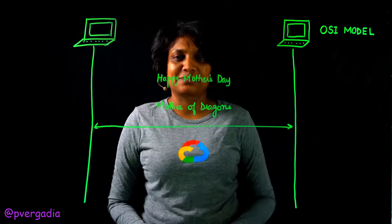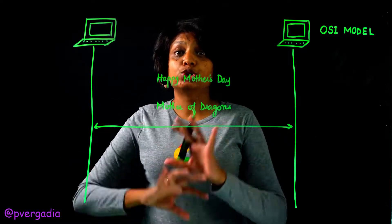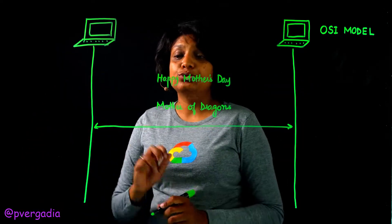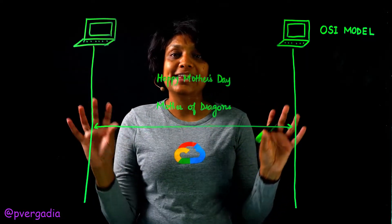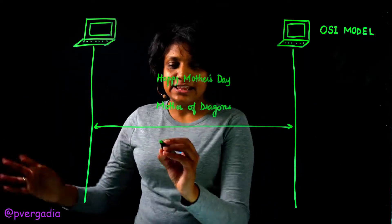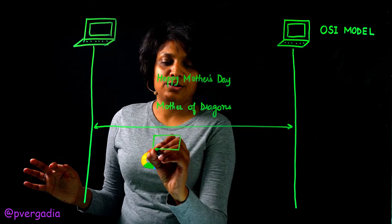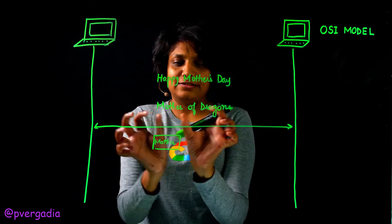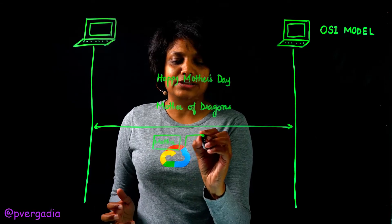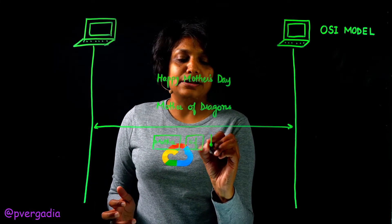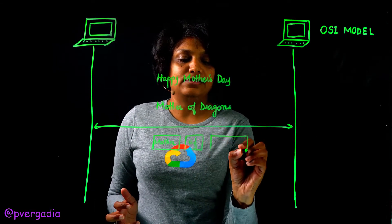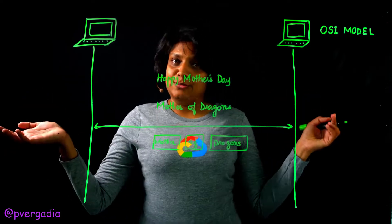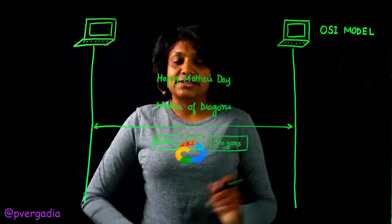Since my box was too big and too heavy, they asked me to split it into three different boxes. So 'Mother' is one box, 'of' is another box, and 'Dragons' is another box. We now have three separate boxes — just imagine these words as boxes.